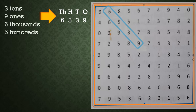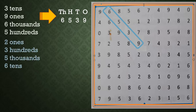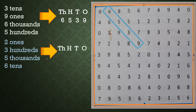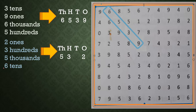Same way we take the next problem. The given jumbled place values are: two ones, three hundreds, five thousands, six tens. The highest place is thousands and the lowest is ones, so I write the place names from ones to thousands. Taking each place value and writing the digits: two in the ones place, three in the hundreds place, five in the thousands place, and six in the tens place. After arranging properly, we get the number 5362.